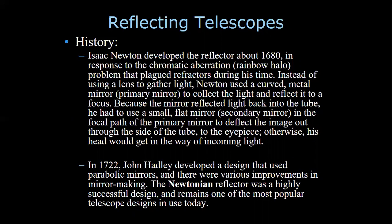The problem with lenses is that when light passes through, it bends differently for different colors because the lens has a different shape. So there is chromatic aberration. To overcome that, Newton proposed using mirrors to collect light.